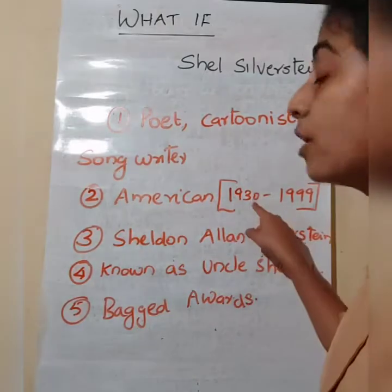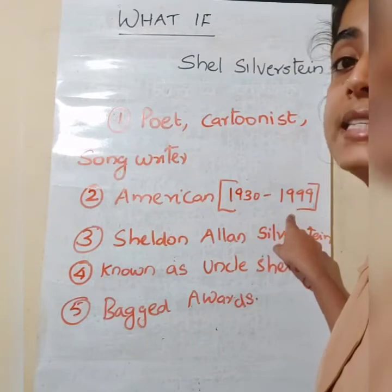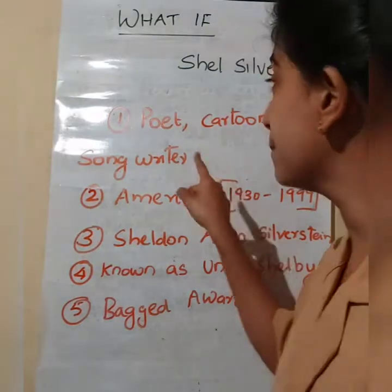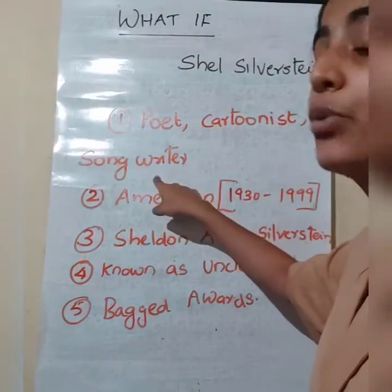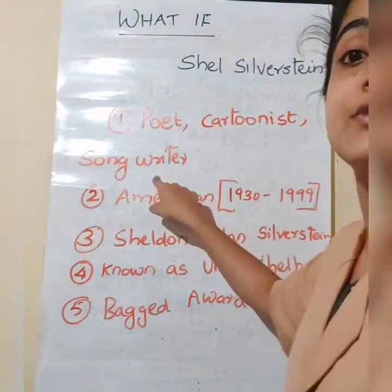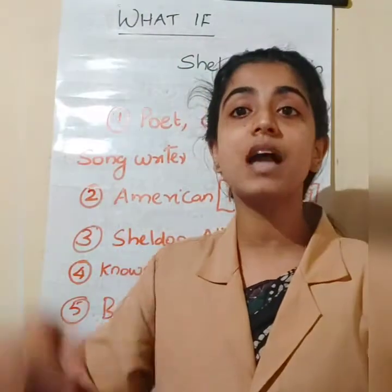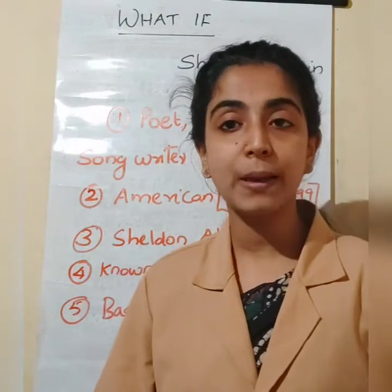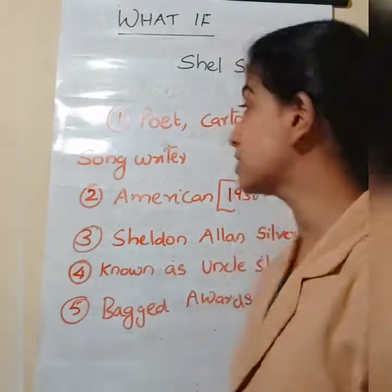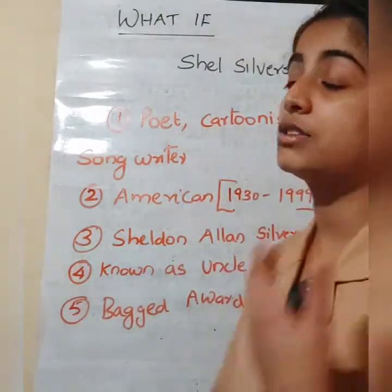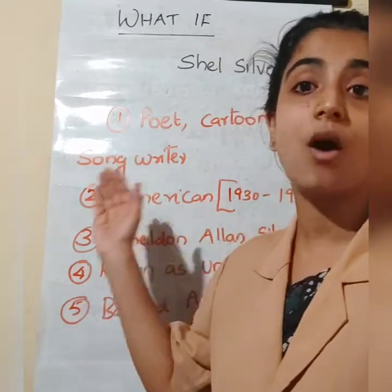He was born in America and his time period is between 1930 to 1999. That means he was born in 1930 and he died in the year 1999. He was famous as a poet, also as a cartoonist, and he was a songwriter too.